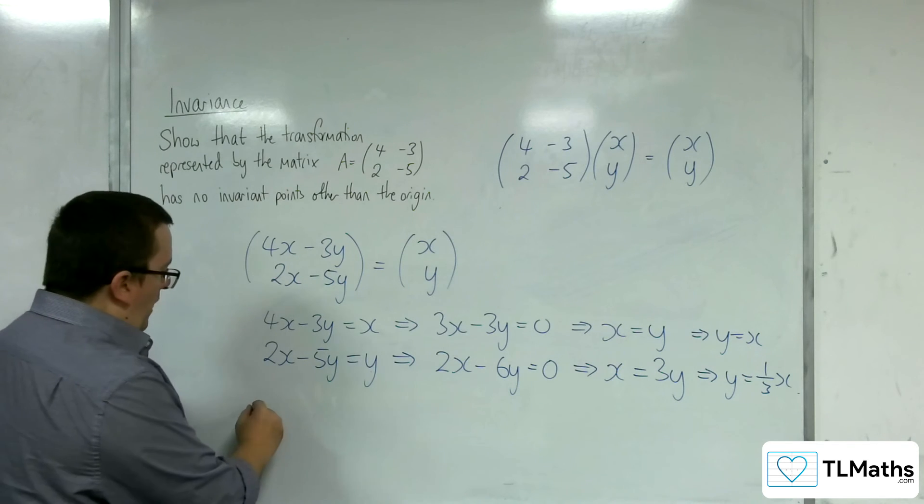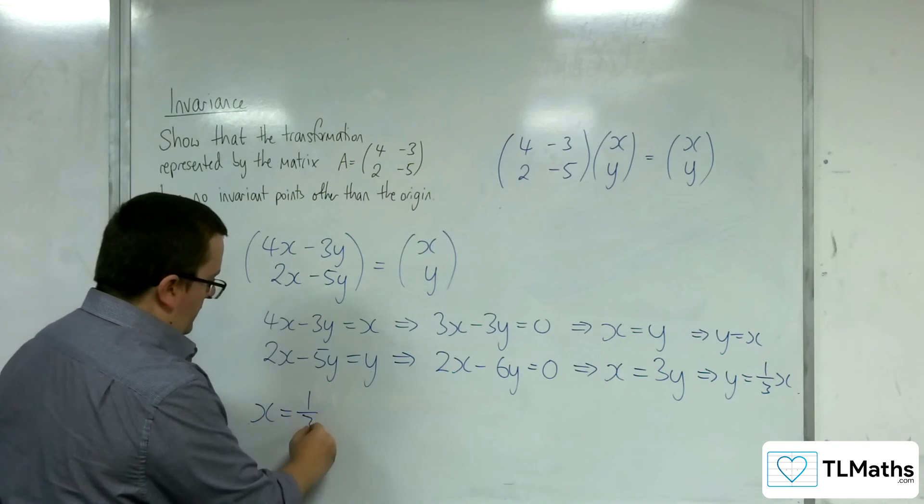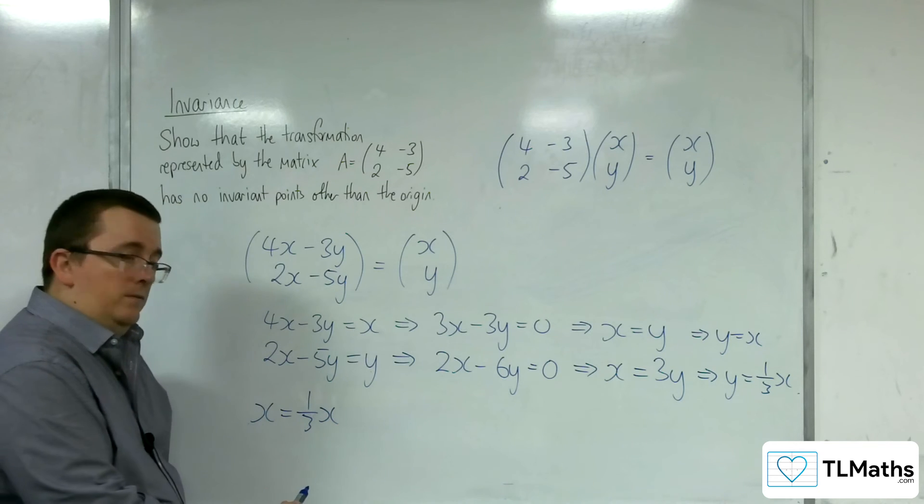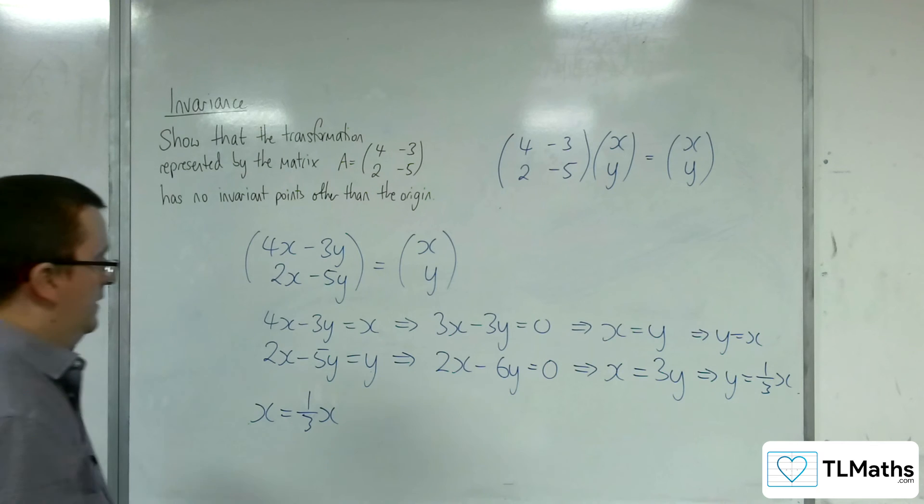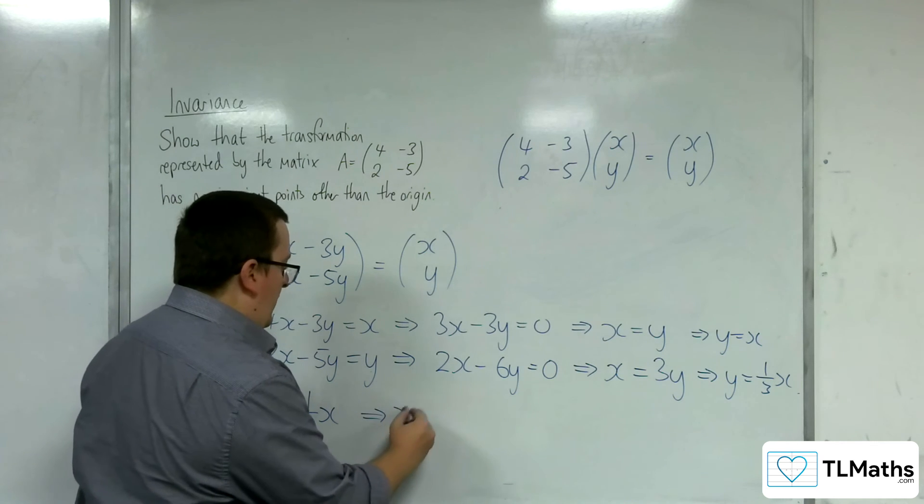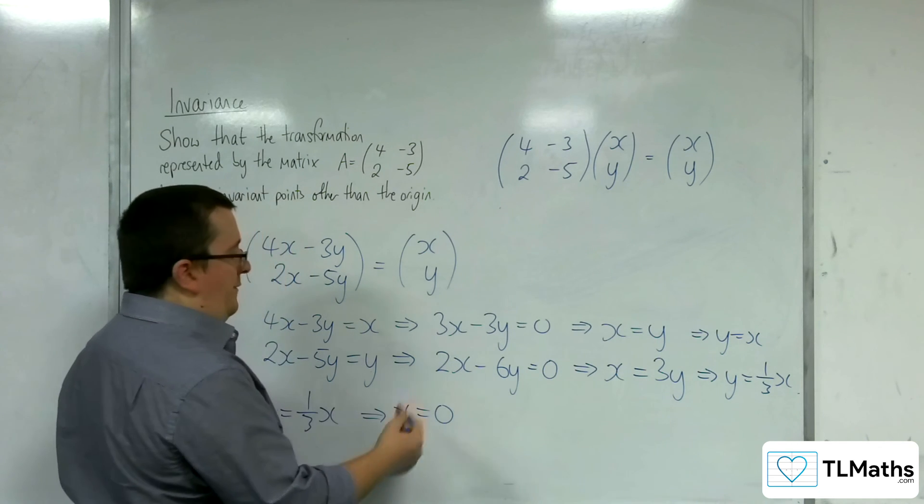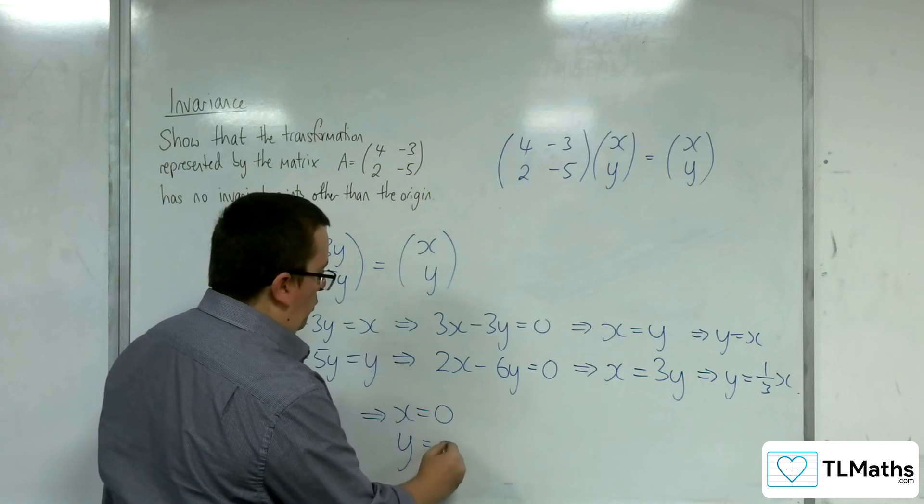So when you're putting one equal to the other, you've got this situation. So putting the y is equal to one another, that's only going to happen when x is 0. And so if x is 0, then y is 0 as well.